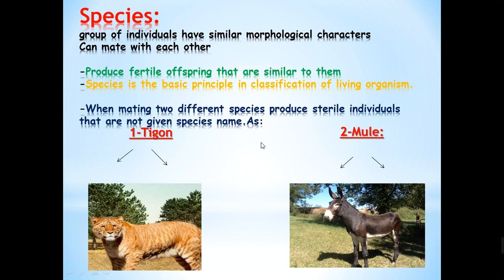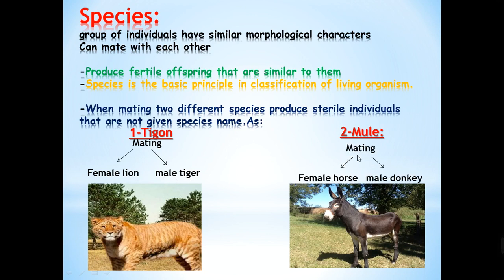What happens if two different species mate with each other? Sometimes it works, but the produced individuals will not be able to reproduce — they will be sterile. For example, a tigon results from mating between a female lion and a male tiger, but this tigon cannot reproduce. Another example is the mule, which results from mating between a female horse and a male donkey, and this mule also cannot reproduce. So a species is characterized by mating between its individuals and producing offspring that can also reproduce; if two different species mate, they produce individuals that cannot reproduce.